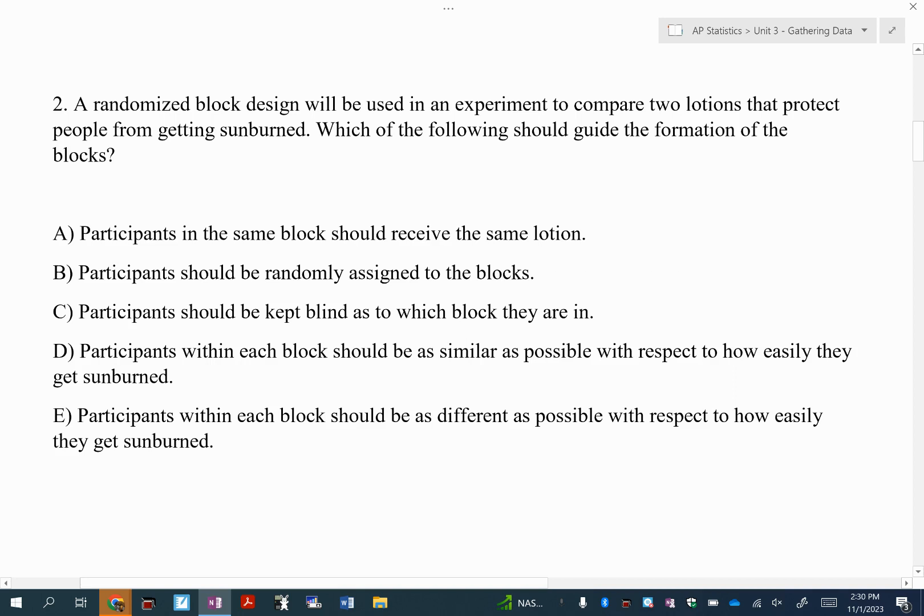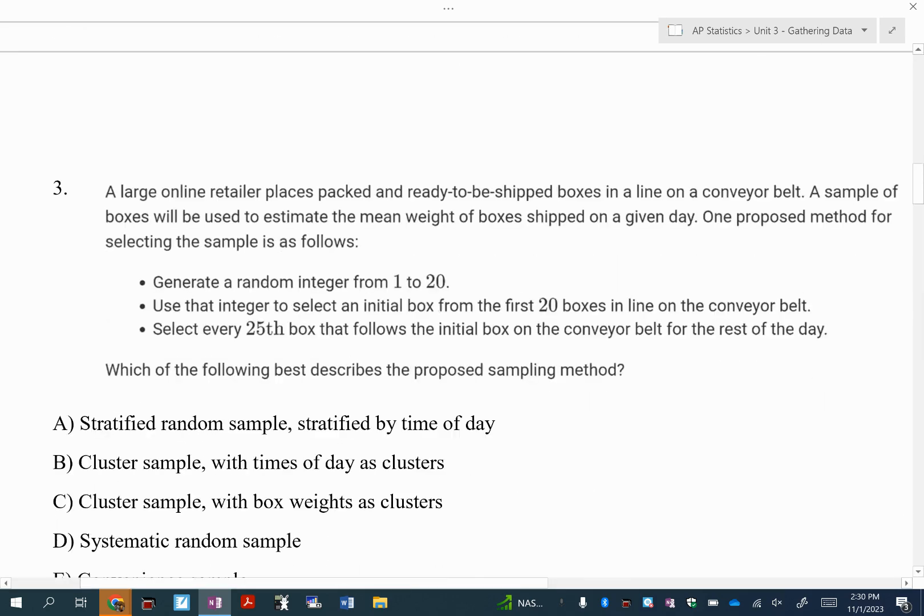I know it can be kind of confusing, but ultimately you want to kind of separate out that variability so you can hone in on if the new lotions are actually protecting people from sunburn or not. So it's really coming down to D or E, and you want the people to be as similar as possible in each block with respect to what you care about, which is how easily they get sunburned.